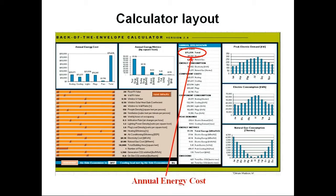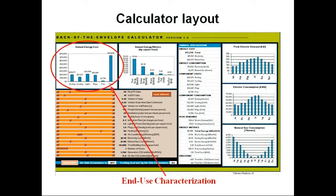Similarly, this area shows the annual energy usage in both electricity and natural gas, the peak demand for both electric demand and peak cooling, and the energy end-use breakdown in dollars. Here you can see the heating, cooling, lighting, plug, and fan energy end-use breakdown, as well as the total. And finally, carbon emissions on a metric ton basis.